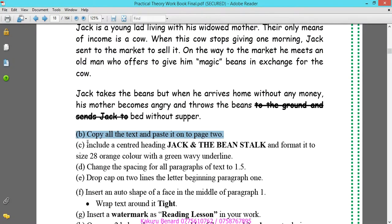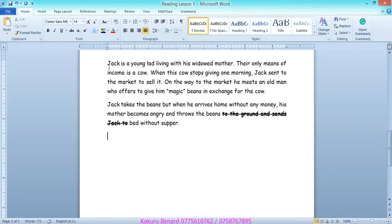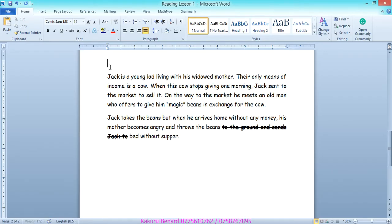Next on our instruction, include a centered heading, Jack and the Beanstalk, and format it to size 28 orange color with a green wave underline. Before paragraph 1 they need a heading. You click before paragraph 1, press enter, you have created space on top. You say Jack and the Beanstalk. Highlight your heading, center, bold, size 28, color orange.